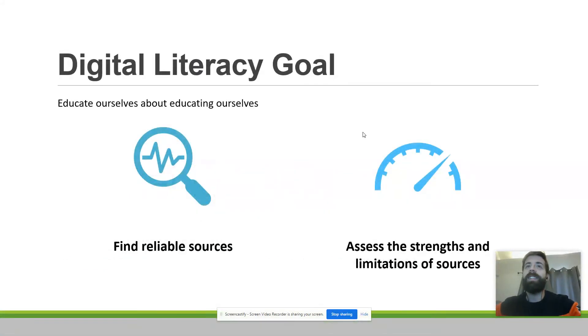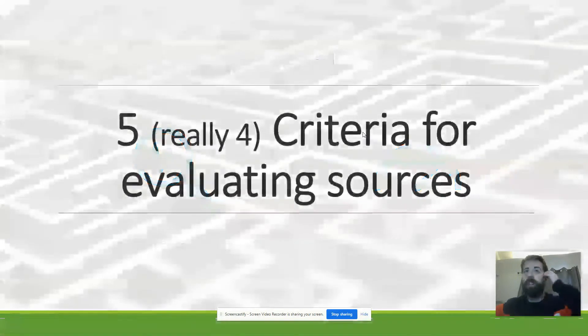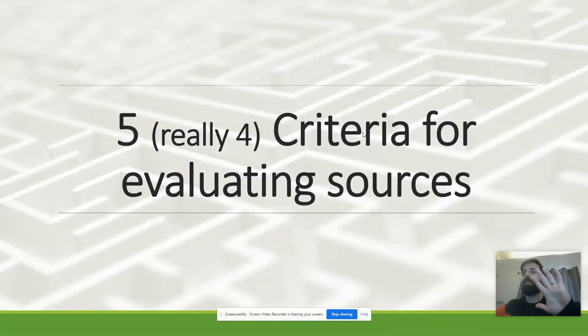Our goal for today is to go through some digital literacy techniques to be able to find reliable sources of information on the internet and also to assess the strengths and weaknesses of those different sources. So we're going to be looking at the five basic criteria for evaluating sources for anything we see online or in print form.